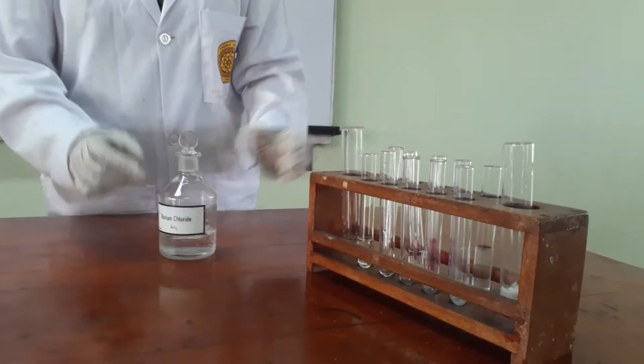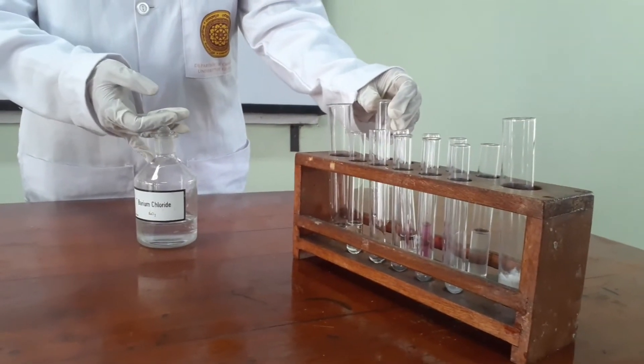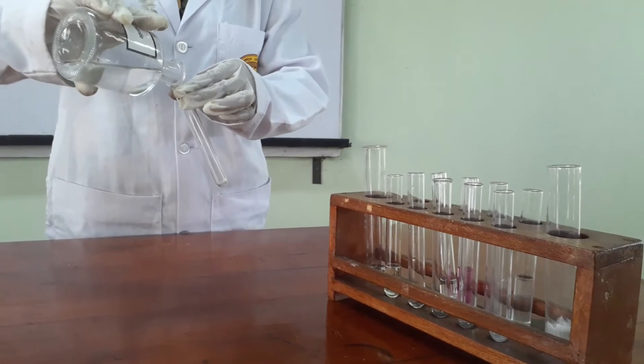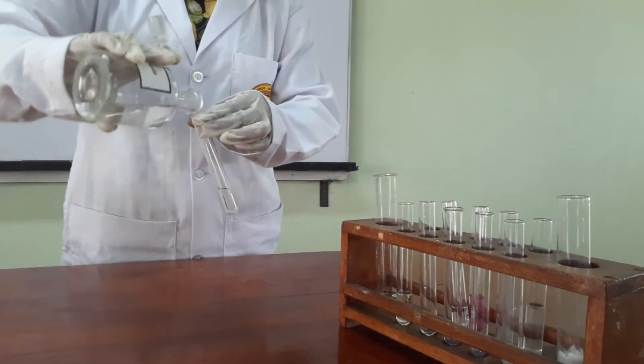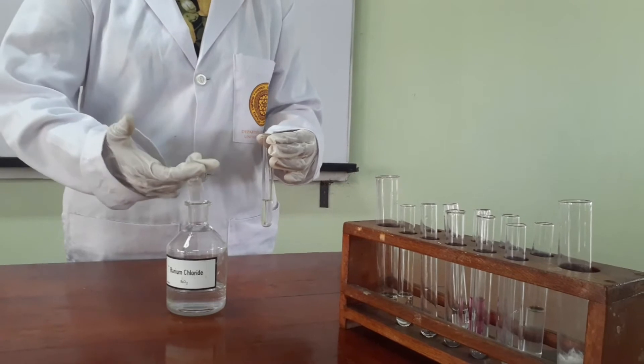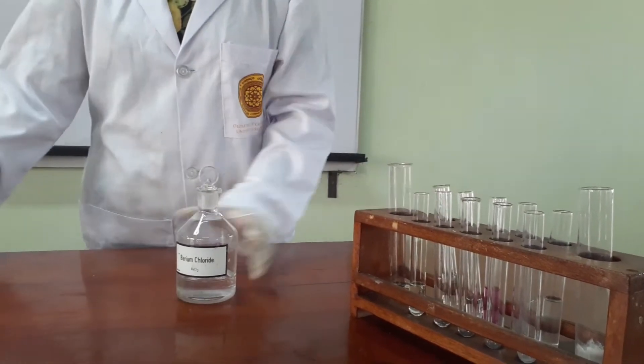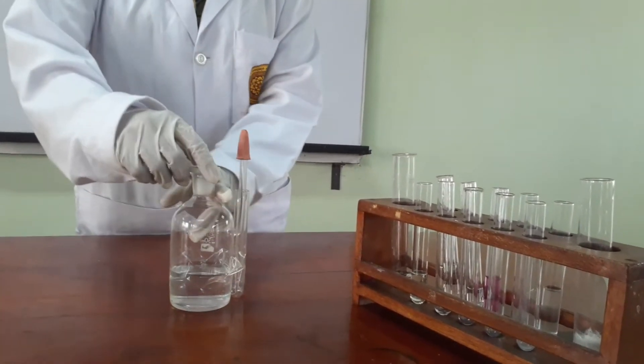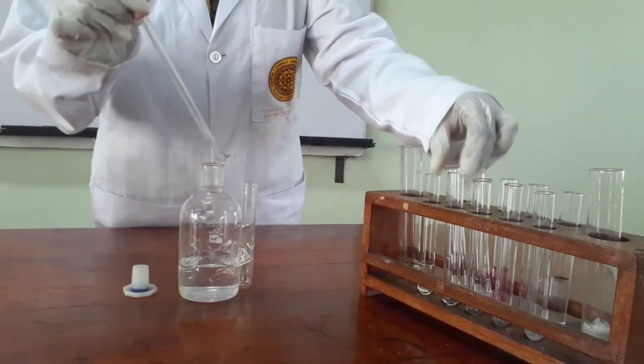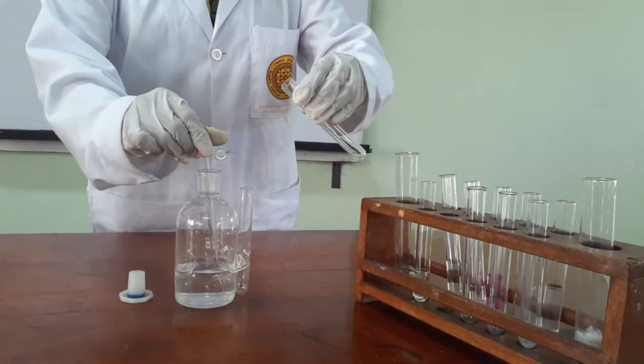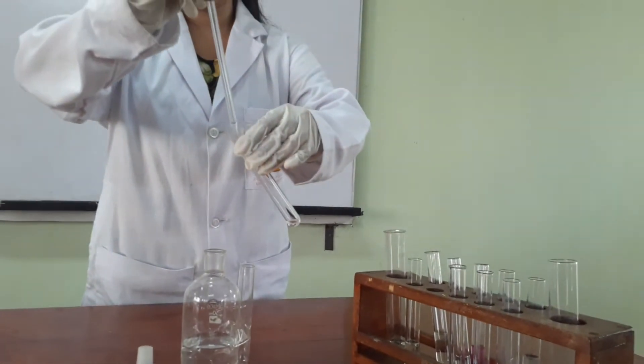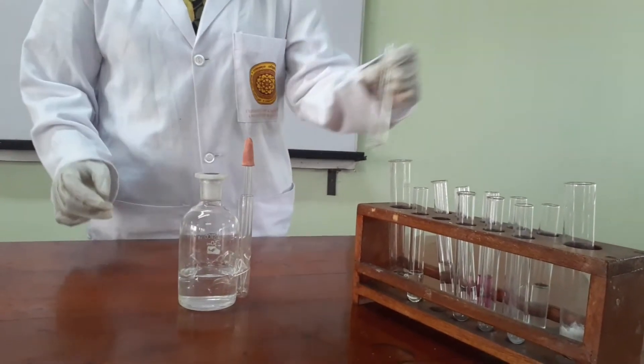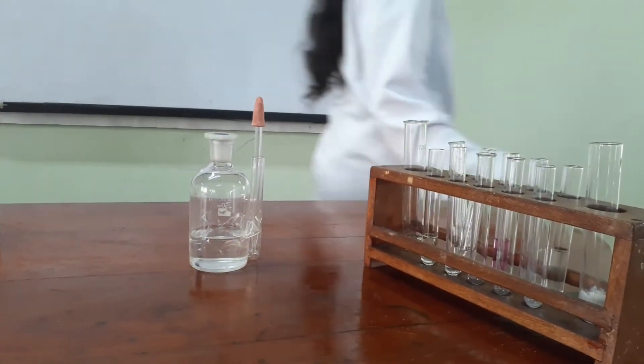When we are using these reagent bottles, we hold the cap with two fingers like this and pour the solution into a test tube. And then we take whatever amount that we need using a dropper. And we close the reagent bottle like this. Instead of using this reagent bottle, we can use this reagent bottle which is attached with its own dropper. So we can easily use that dropper to take the specific amount of reagent to a test tube. We do not need to take extra amount of reagent to another test tube.